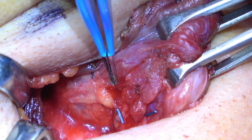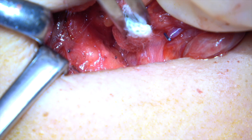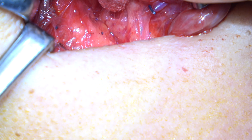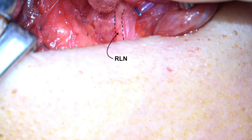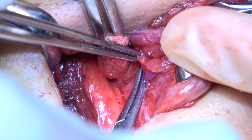After the parathyroid is partially dissected off, we can see the cleavage plane. We anticipate the recurrent laryngeal nerve to be between the superior parathyroid and the thyroid gland, with a somewhat more lateral course on the right. Once a bit of fascia is swept off the gland, the recurrent laryngeal nerve can be seen. The nerve is then traced out, and it is important to stay right on the nerve and to be cognizant of early branching.